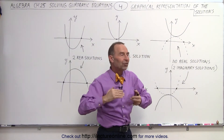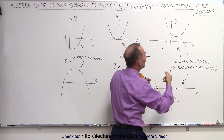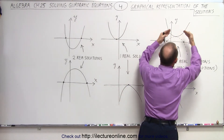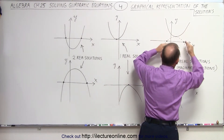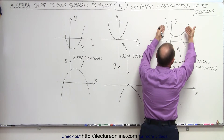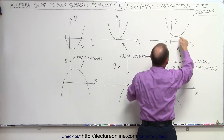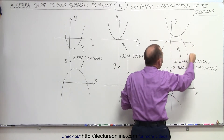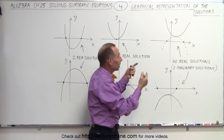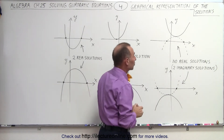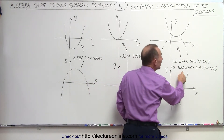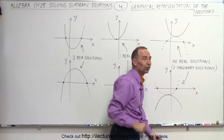But there will be two imaginary solutions, because if we take the mirror image of our parabola and flip it over — we simply take that parabola and flip it over — we have an imaginary parabola, and that imaginary parabola does cross the x-axis in two places. So therefore there are two imaginary solutions.